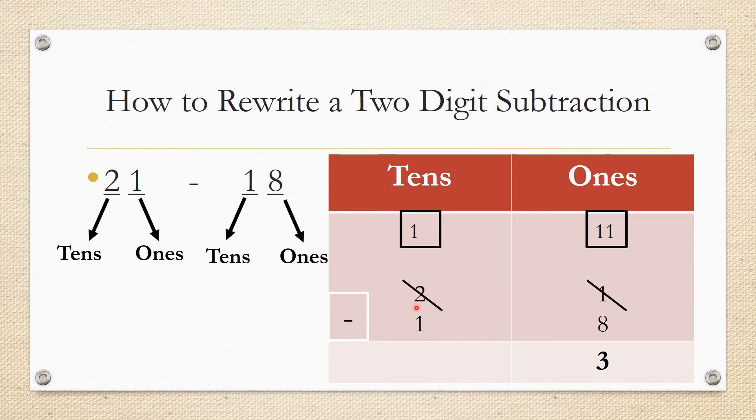Minus 18: the 8 is in the ones place and the 1 is in the tens place, so I would put the 1 under the 2 and the 8 under the 1. Now I will subtract. As we said in our previous lesson, if I have a small number minus a big number I cannot do it and I have to regroup.